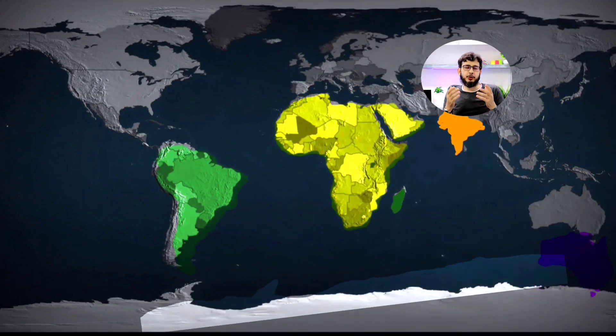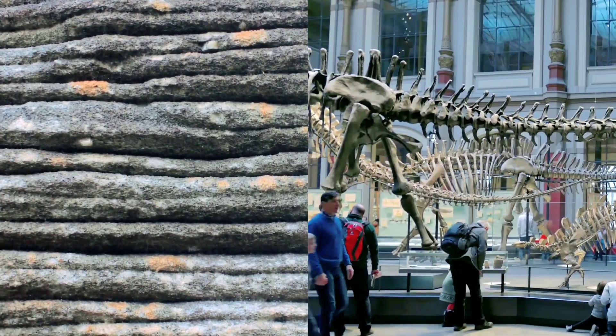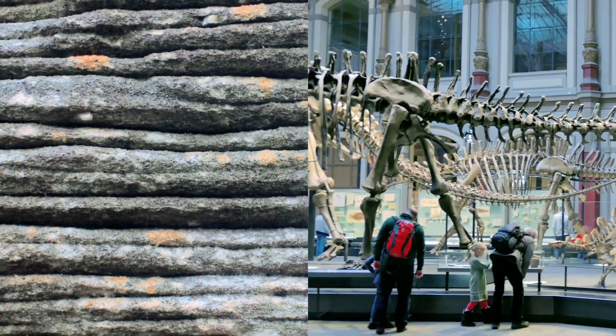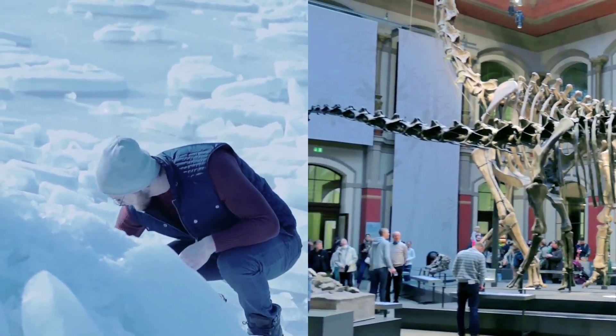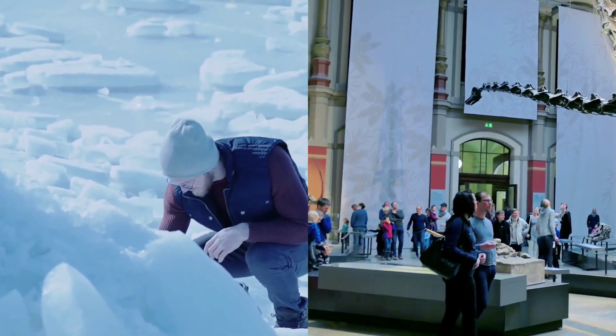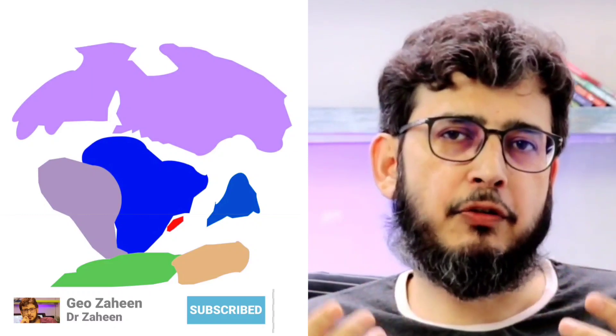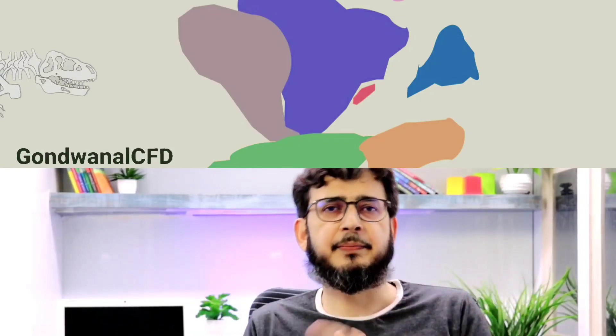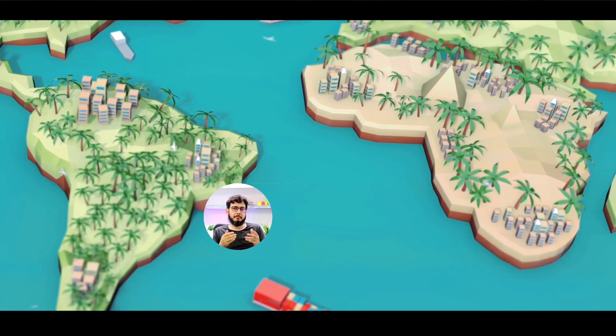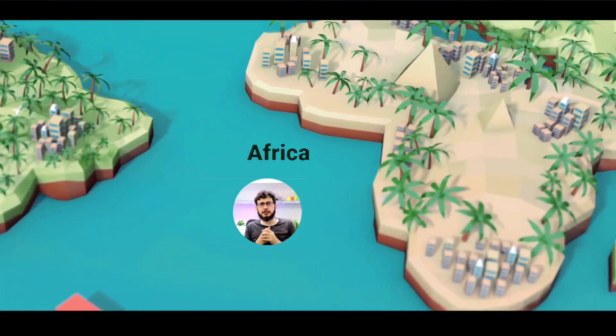Peninsular India, shown as the orange-colored land sandwiched between Madagascar and Antarctica, was part of Gondwana Land. As evidence, geologists, paleontologists, and glaciologists provide five proofs: the jigsaw fit or shape match of continents; matching of fossils like plants and animals across regions; a similar sequence of rocks found at numerous locations across continents, where bordering rocks match with rocks of corresponding areas.